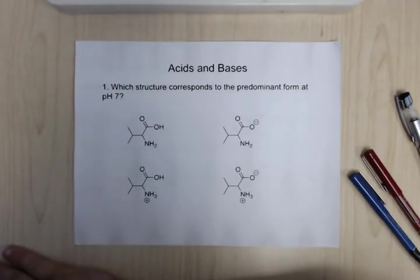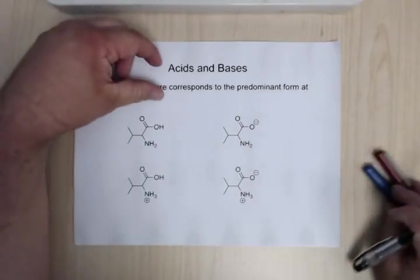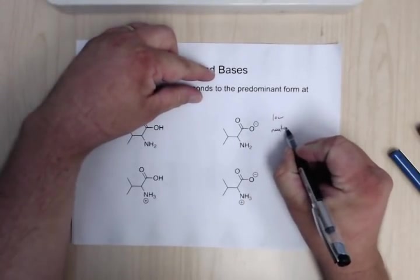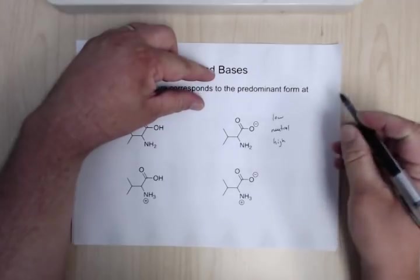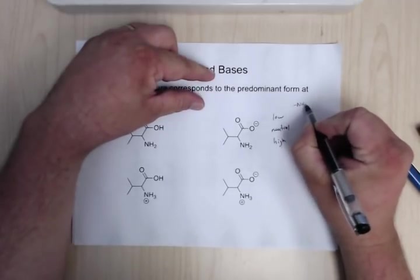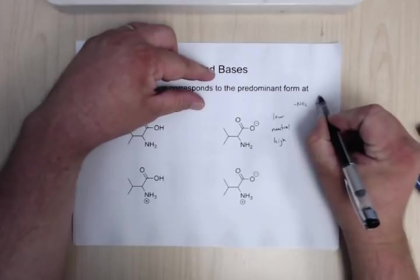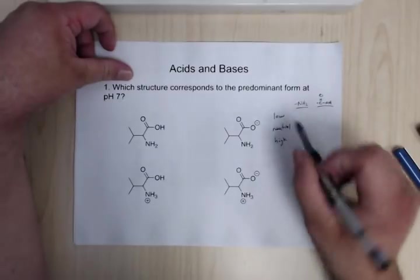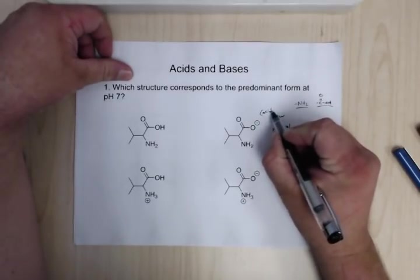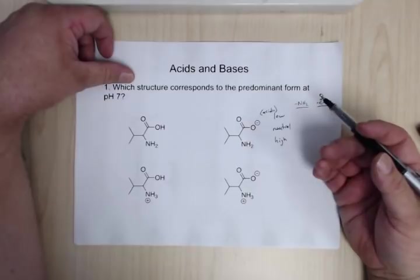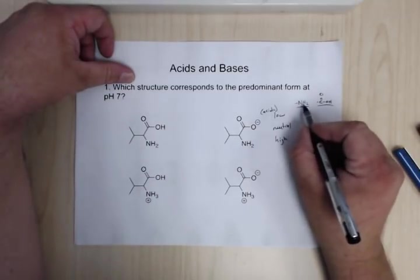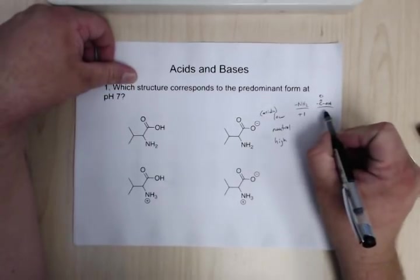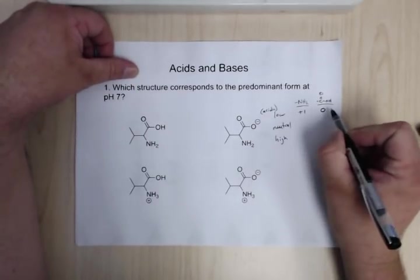One of the things to remember about these is that at low pH, at neutral, and at high pH, what's the form for the amine and for the carboxylic acid? And so at low pH, it's acidic, so you can have a lot of protons around, a lot of H+. So that means this is going to be protonated, so they're both going to be protonated, which means this has a plus one charge, this has a zero charge.